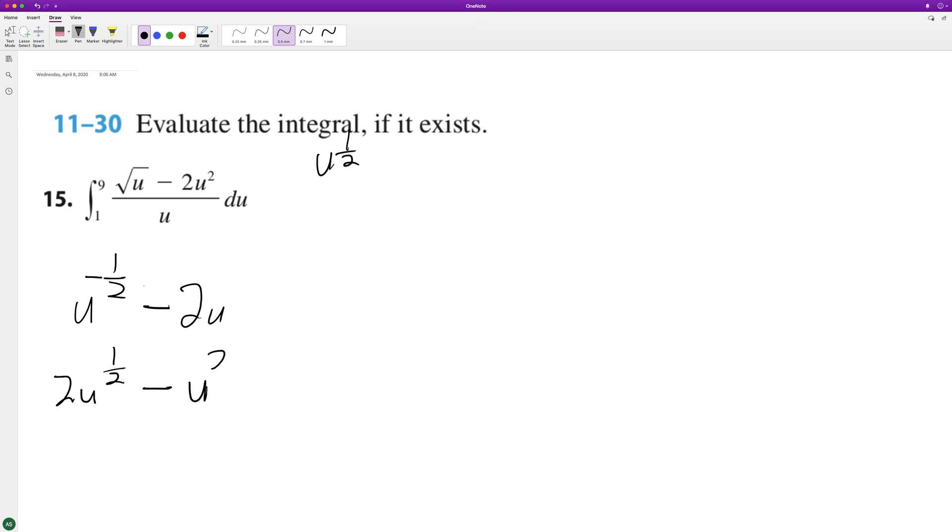So we get 2 square root of 9 minus 9 squared, minus 2 square root of 1 minus 1 squared.